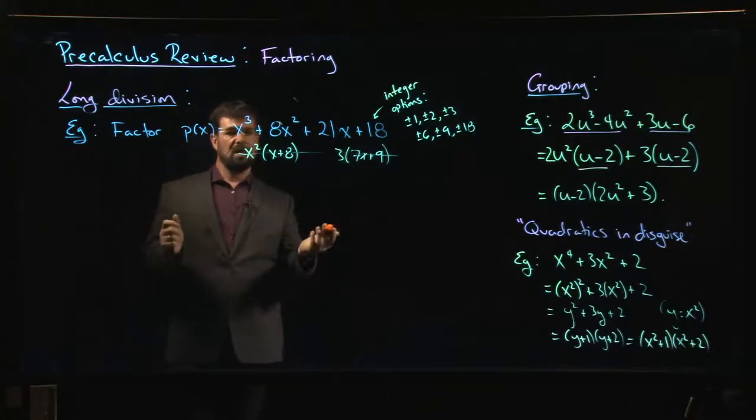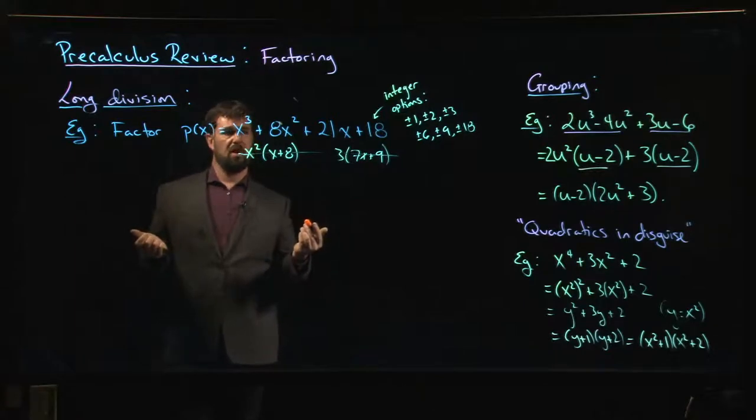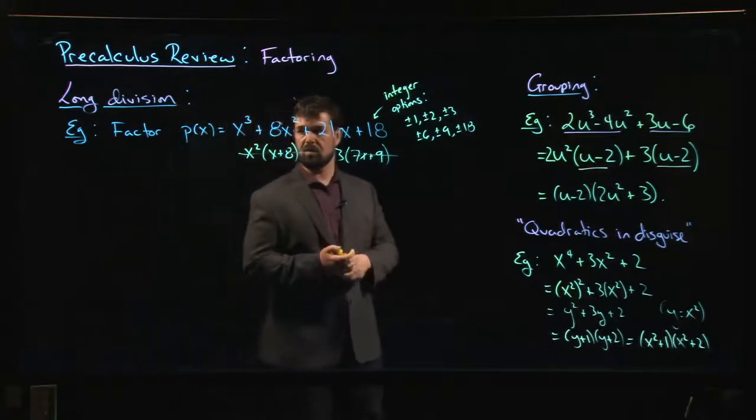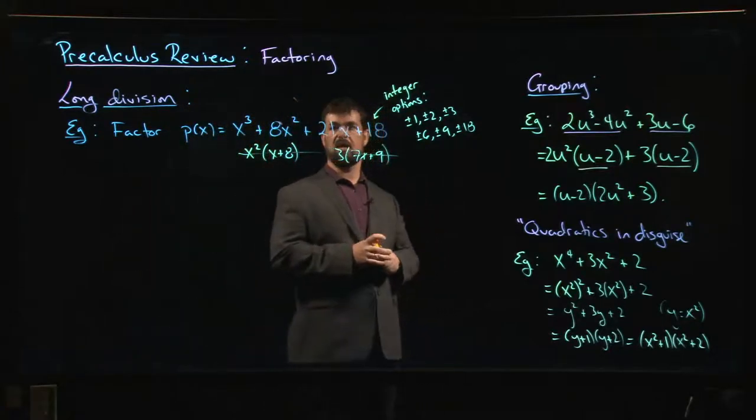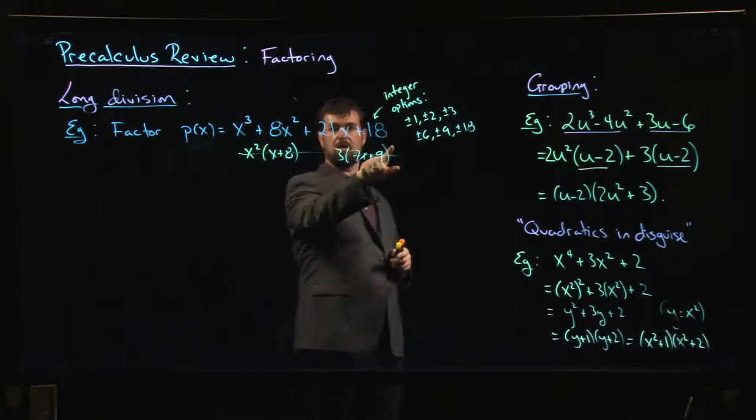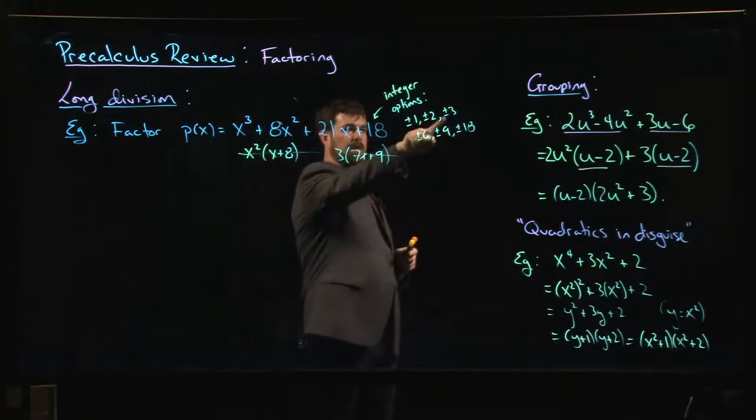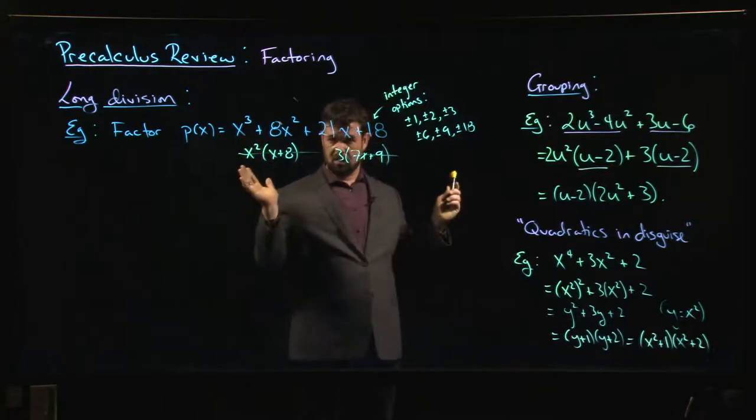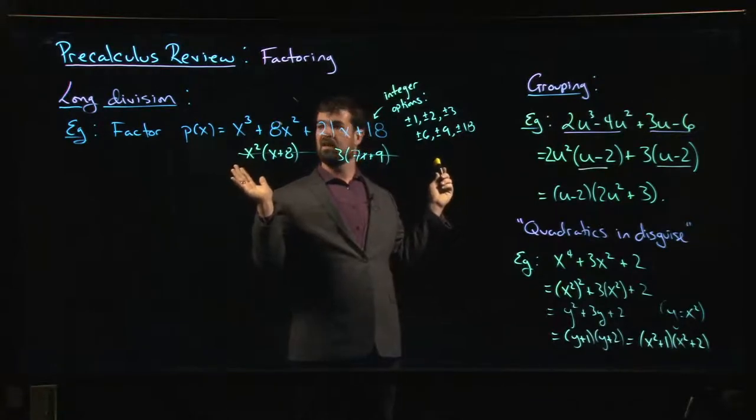So you start testing them out. You can do a bit of trial and error if you like. You see what works. Sometimes you can kind of guess. You can look at things and say, well, none of the positive ones are going to work. Any of the positive roots, I've got plus, plus, plus, plus. Positive roots aren't going to work. So at least I can narrow down to the negative.